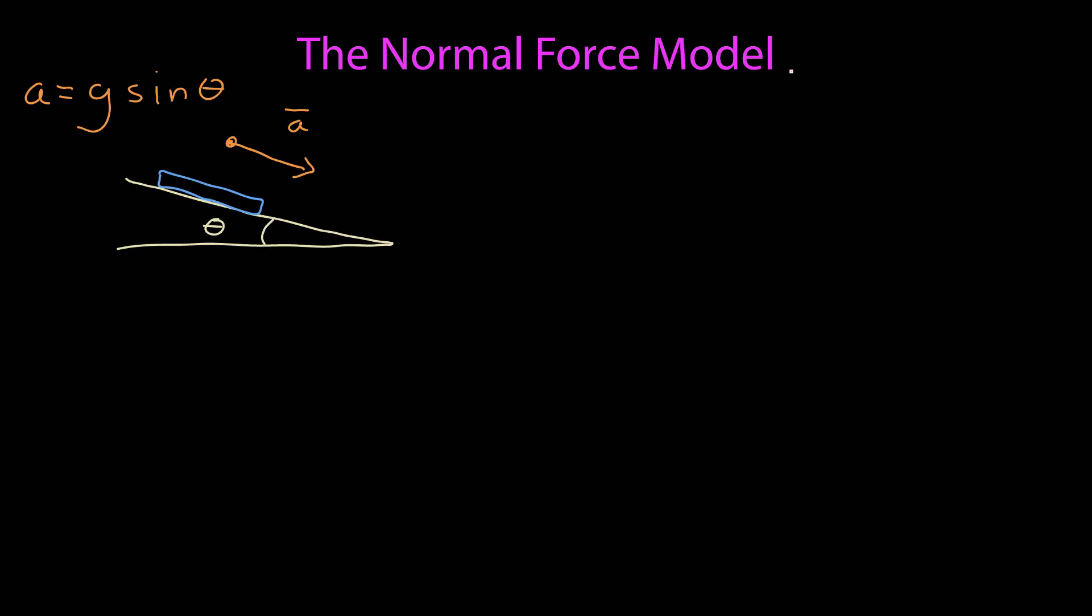In a previous video, we calculated the acceleration of an object sliding down an incline that was frictionless and set at an angle theta above the horizontal. And we found that the acceleration was g, the acceleration due to gravity, times sine theta, where theta was that angle.